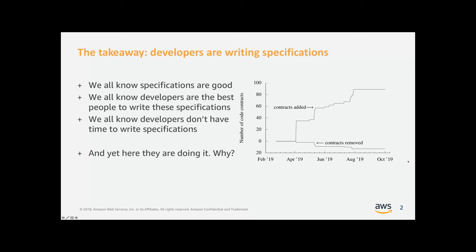You can see on the graph here, it's going up over time, and these are developers writing it. So what happened? We believe it's really because we focused on turning proof into a social process — focused on the question of how can we get inside the development workflow of the development team in order to best support them.